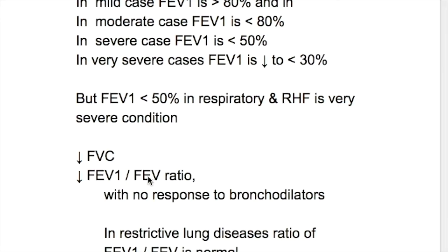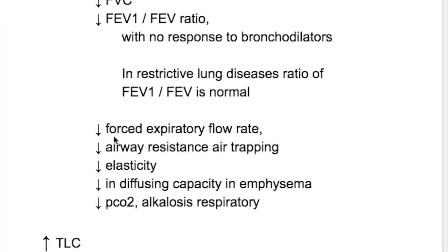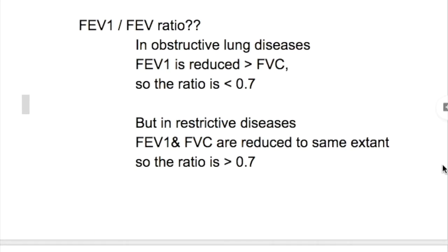Number two is decreased forced vital capacity. Number three is decreased ratio of FEV1 to FVC, and there is no response to bronchodilators in emphysema, unlike in asthma. What is the difference in the FEV1 to FVC ratio in obstructive and restrictive lung diseases?